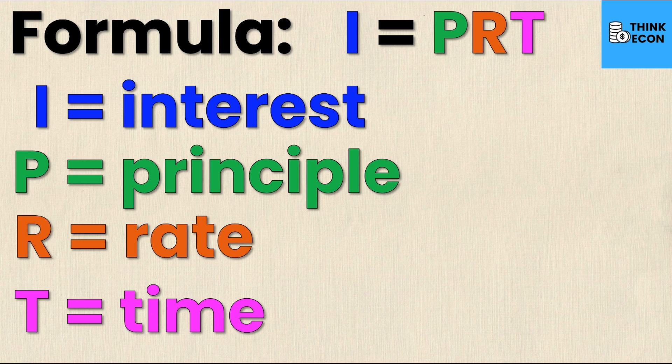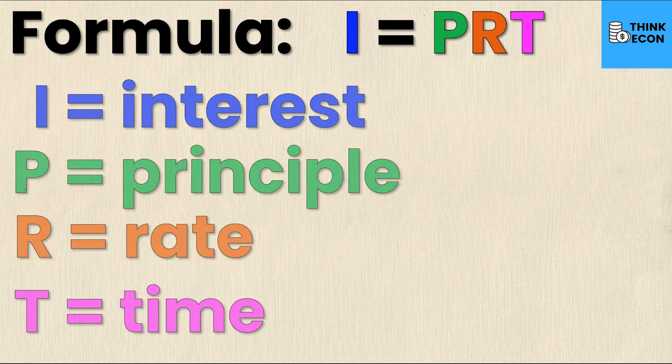Finally we have T, which is time. It's not specified to be years, months, or days because every unique example could have a different unit for time. Normally an interest rate is calculated annually and therefore the time would be in years, but this isn't always the case. T is the number of times the interest is applied. I think the best way to explain this is to look at an example, so let's do that next.